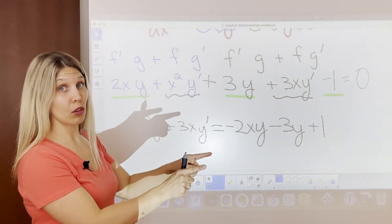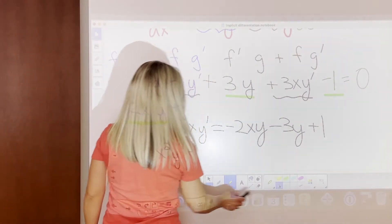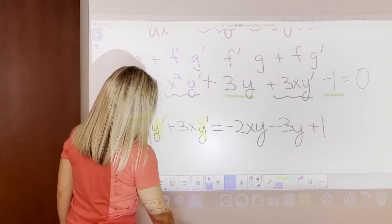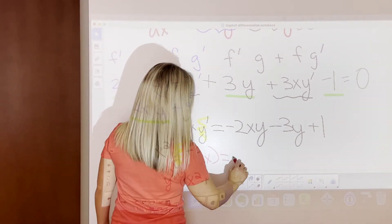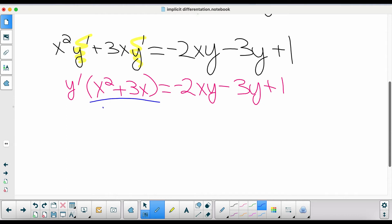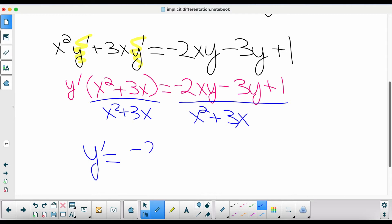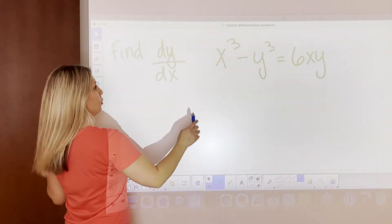Move everything without y prime to the other side: x squared·y prime and 3x·y prime stay; the rest moves over. So x squared·y prime plus 3x·y prime equals negative 2xy minus 3y plus one. Factor out y prime: y prime times (x squared plus 3x) equals negative 2xy minus 3y plus one. Divide to get y prime equals (negative 2xy minus 3y plus 1) over (x squared plus 3x).